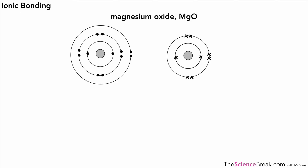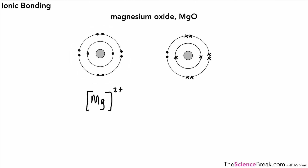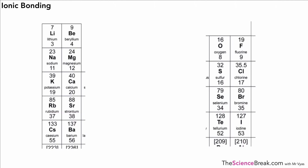One more example: magnesium oxide. Again, magnesium has two electrons in the outer shell. Oxygen is missing two electrons if it wants a noble gas configuration. So we have magnesium with a plus two charge — we can show the full outer shell — and oxygen with a full outer shell and a two minus charge because it has gained two extra electrons.